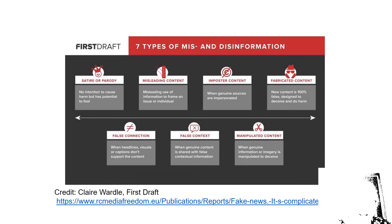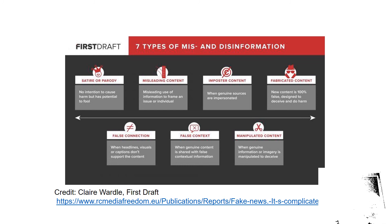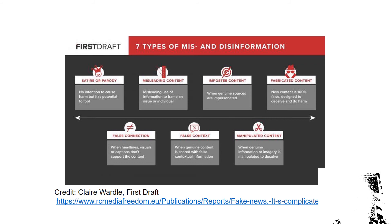Number five: false connection. That is, when headlines, visuals, or captions don't support the content. For example, when I put a picture that is very appealing but has nothing to do with the content of the story, or when I write a headline that is very exciting and draws the reader's attention, yet what is inside the article has nothing to do with the actual title.